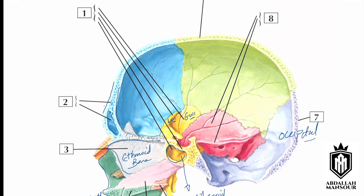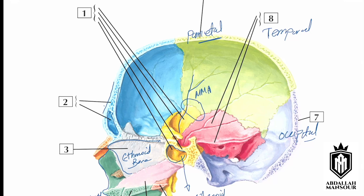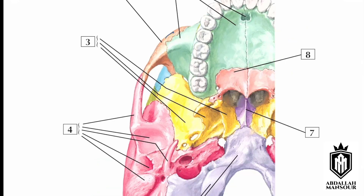Number eight is the temporal bone and number nine is the parietal bone. On the inner side of the pterion you can see a large impression of the middle meningeal artery. The pterion is formed by four bones: parietal, frontal, greater wing of the sphenoid, and the squamous part of the temporal bone.